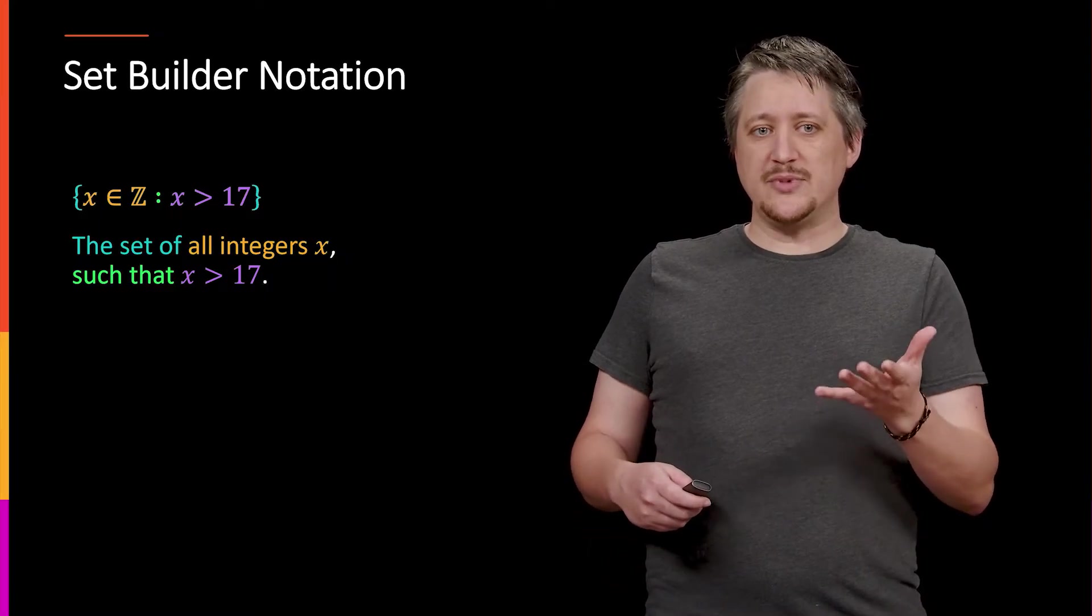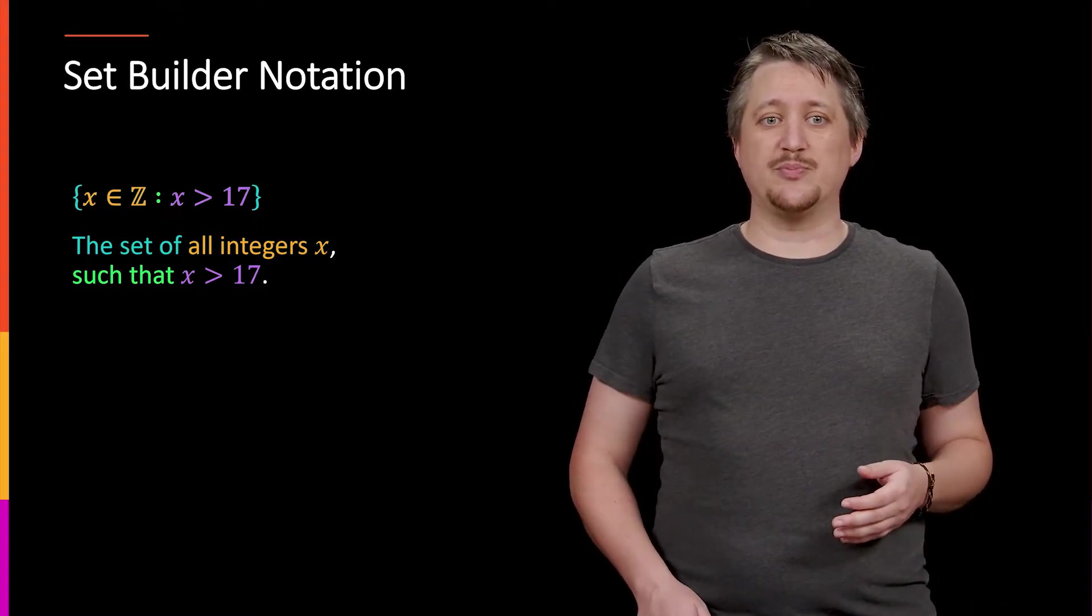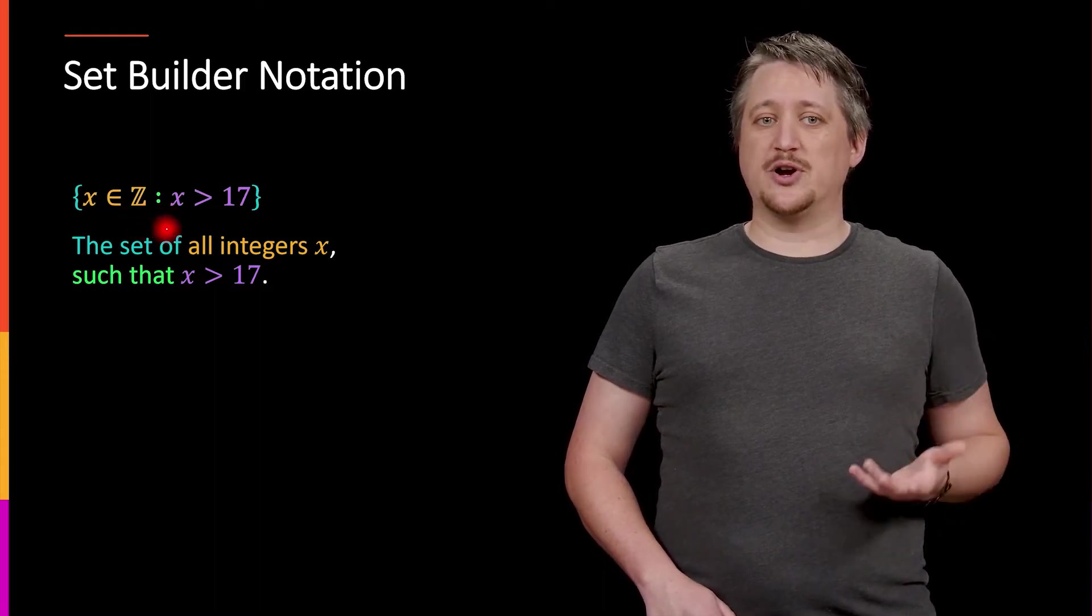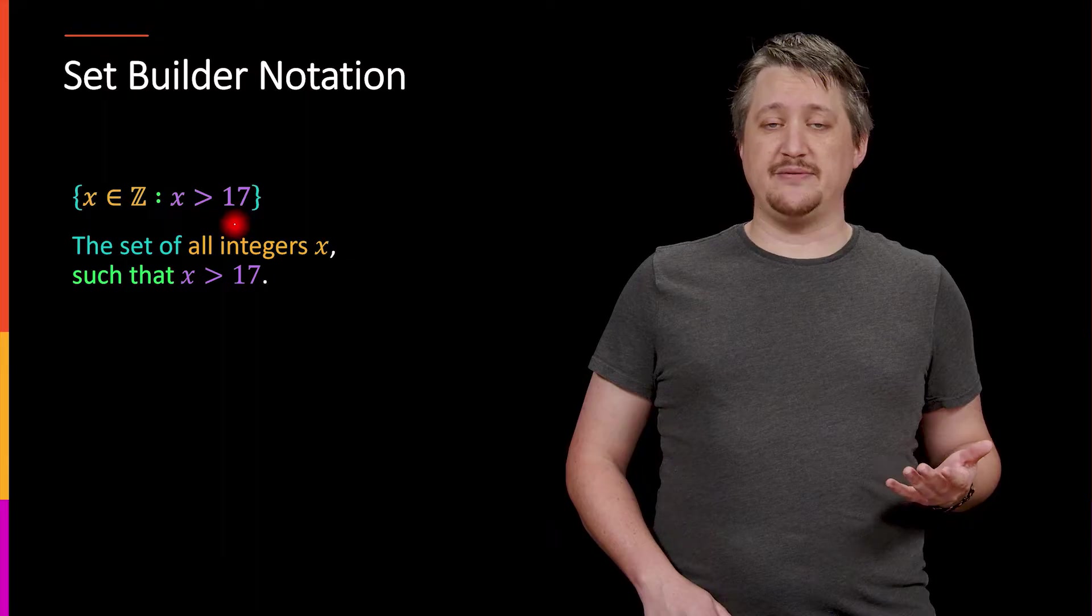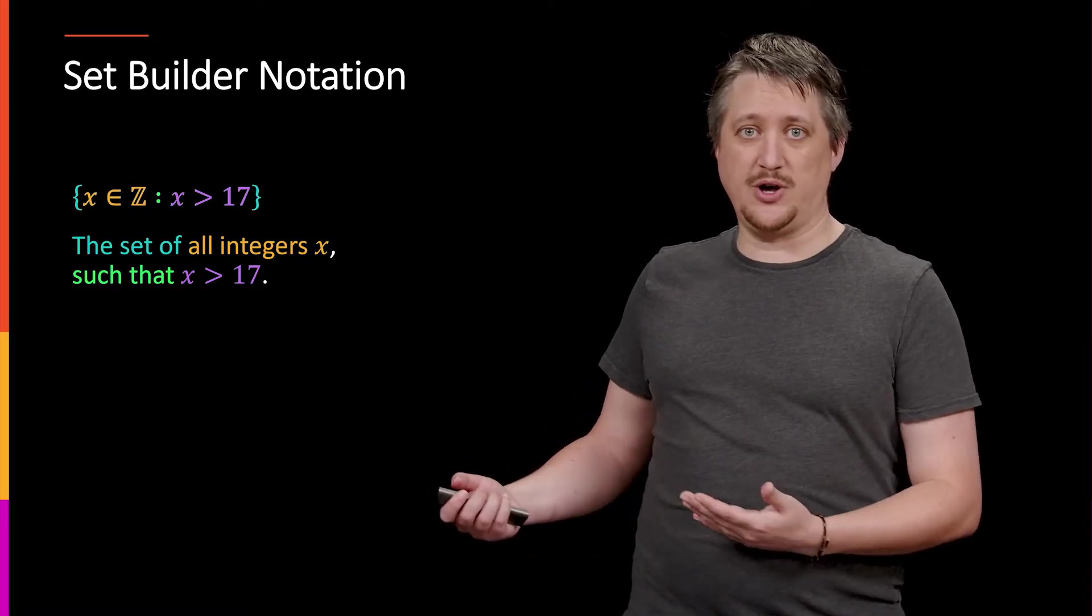So a human way of reading this, because the math way of reading this would be the set of x that are members of the integers, we don't speak like that as humans. So we'd say the set of all integers x such that, and then we have a property. So in this case, x is greater than 17. So the actual set here then, it's only integers, that's what that orange part, that x member of z thing is. And it has to further satisfy the property that x is strictly larger than 17. So this set would be something like 18, 19, 20, and so on.